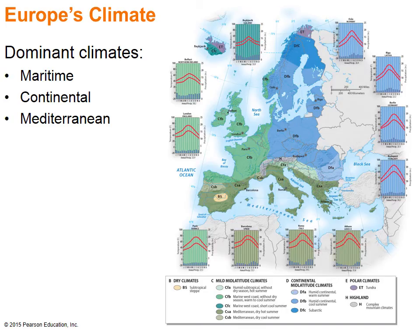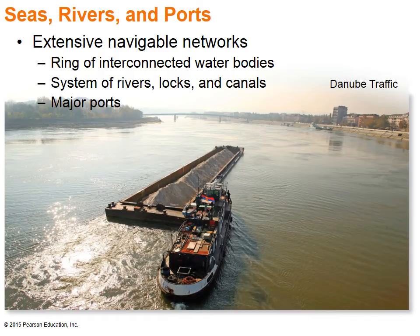Three principal climates dominate this region. Along the Atlantic coast is a moderate and moist maritime climate, modified by oceanic influences. Further inland, you will find continental climates with hotter summers and colder winters. To the south is a dry summer Mediterranean climate. Most of this region is either touching water, or countries inland have access to water through an extensive network of navigable rivers and canals.